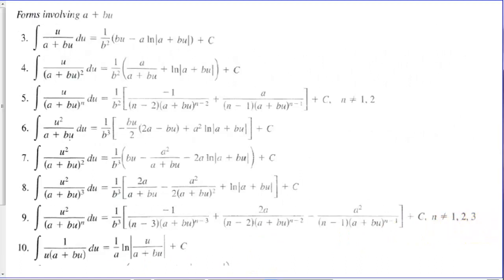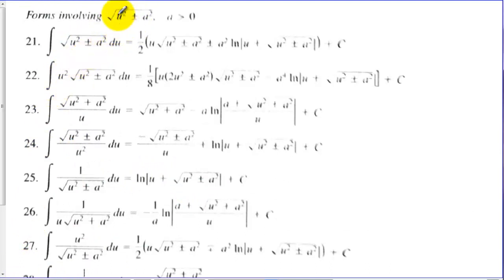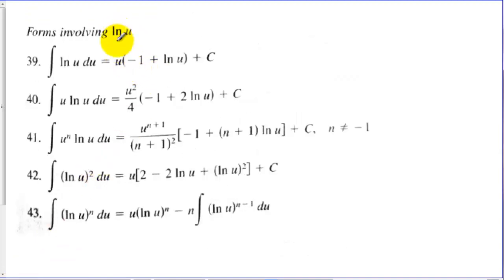This is part of an integral table from your textbook in the section we're working with. You can see we have all these different patterns organized by groupings. One grouping has in the denominator a constant plus a constant times some expression u. Another grouping has an expression squared plus or minus some constant squared. Another grouping involves natural logarithms. In our table, we go up to 43 rules, which is just a small subset of what exists.